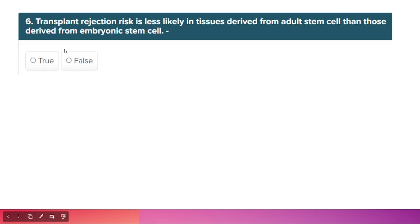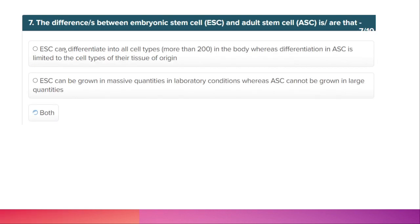Transplant rejection risk is less likely in tissue derived from adult stem cells than those derived from embryonic stem cells, and this is true. The differences between embryonic stem cells (ESC) and adult stem cells (ASC) are: ESC can differentiate into all cell types — more than 200 in the body — whereas ASC differentiation is limited to cell types of their tissue of origin. Also, ESC can be grown in massive quantities in lab conditions whereas adult stem cells cannot. Both options are correct.